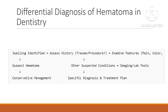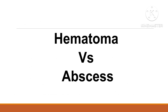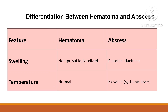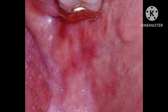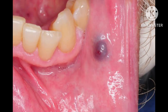Coagulation profile and complete blood count should be done to assess anemia or platelet abnormalities and to rule out bleeding disorders. Common differential diagnoses include abscess — a painful swelling often with systemic signs like fever — and ecchymosis, which appears as flat diffuse discoloration without swelling, usually painless. Hemangioma is a blue-red lesion that blanches on pressure and is commonly congenital.